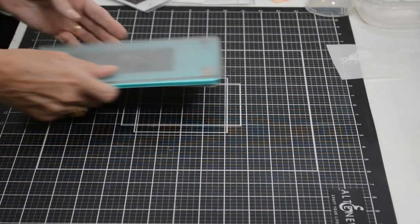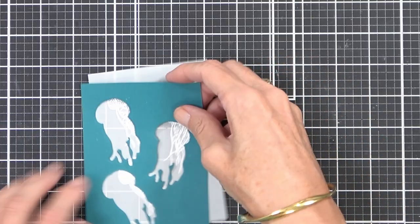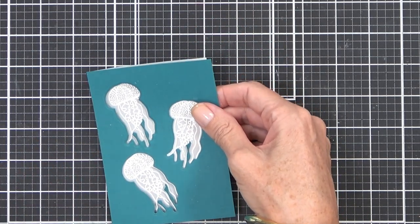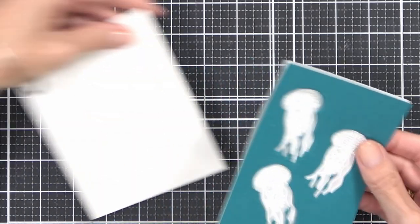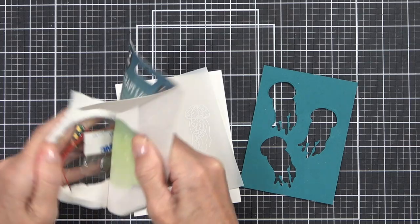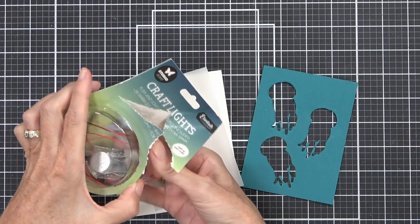Another way that you could do this is just stamp your three jellyfish and then cut them out and just adhere them behind the panel. That would work just as well too. And I could just go ahead and die cut all of my jellyfish out and I've got my three windows ready to go, ready to be lit up.